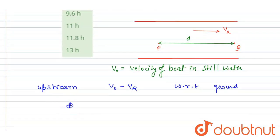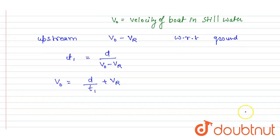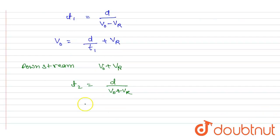So if I calculate the time t₁, it will be d/(v₀ - vᵣ). And you can also write it like v₀ - vᵣ equals d/t₁. And in the second case, in downstream, the velocity will be v₀ + vᵣ, so here I will write t₂ equals d/(v₀ + vᵣ).